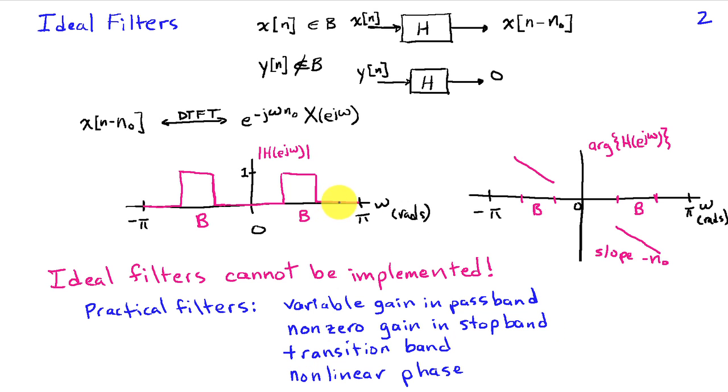We're not going to have zero gain in the stop band. We won't be perfectly attenuating signals that are out of band. There will be a transition band, in other words, a range of frequencies where the filter is allowed to transition from pass band to stop band. And then finally, we may have non-linear phase, depending on the type of filter that we choose.